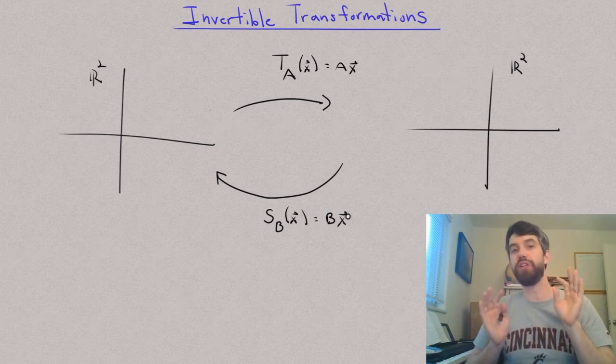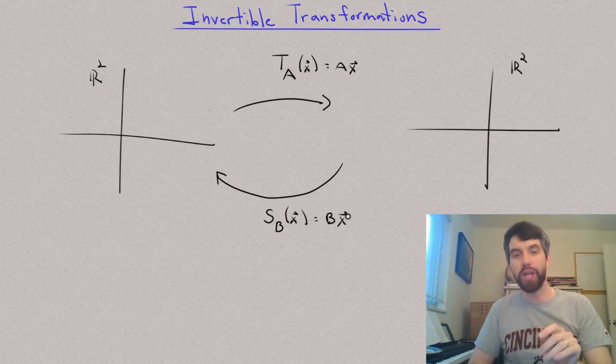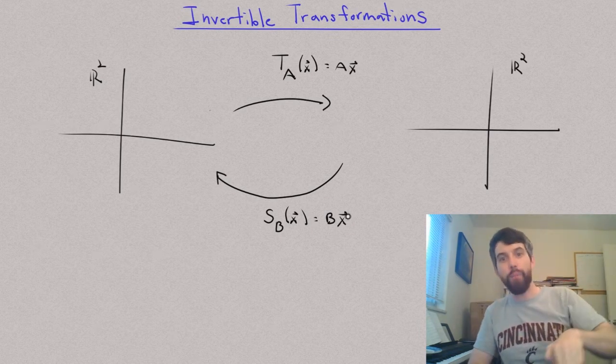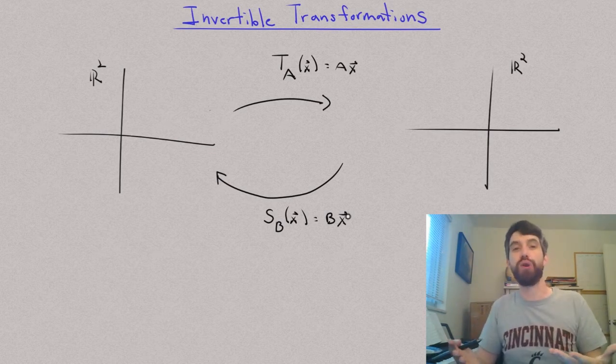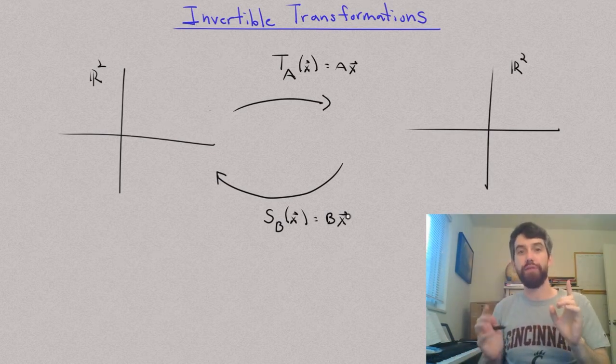Our transformation is invertible if, when I go around the circle where I first do the T and then I go back through the S, if going around in that circle takes every vector to the same spot. In other words, it's like doing nothing at all. That is my notion of invertibility.